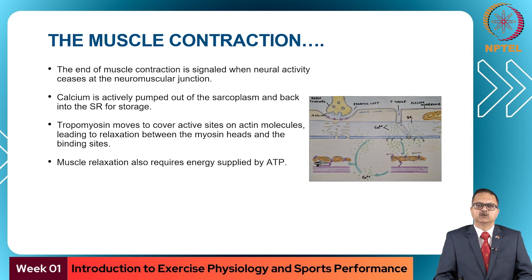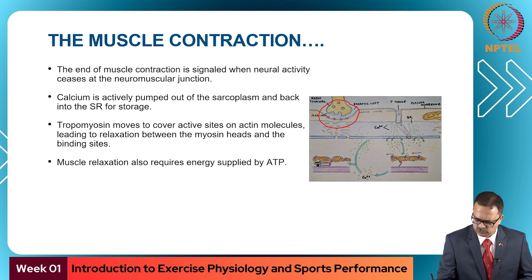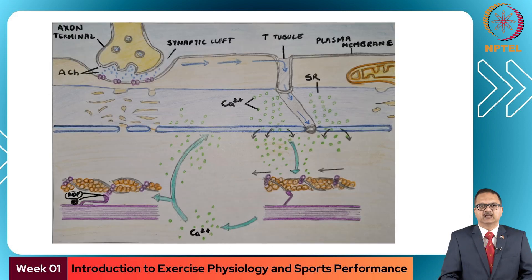The end of the muscle contraction is signaled when neural activity ceases at the neuromuscular junction. When there is no more impulse coming from the nerves, the contraction ends. Calcium is actively pumped out of the sarcoplasm and back into the sarcoplasmic reticulum for storage. Tropomyosin moves to cover the active sites on the actin molecules, the myosin heads relax, and muscle relaxation occurs. Muscle relaxation also requires energy supplied by ATP.